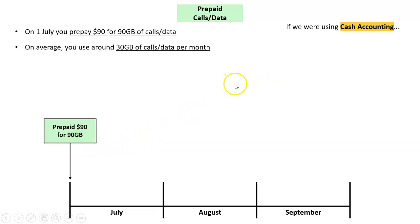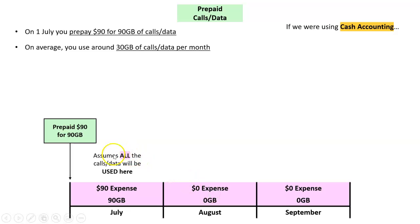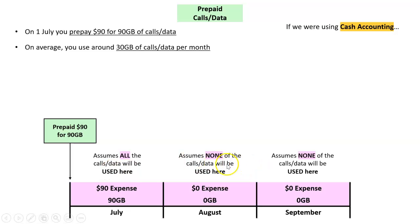If we were using cash accounting — which we don't want to do — we'd say there's a $90 expense in July because that's when we paid it, and then a $0 expense in August and September. That makes no sense because it assumes all the calls and data were used in July, which they weren't, and then assumes none will be used in August and September.